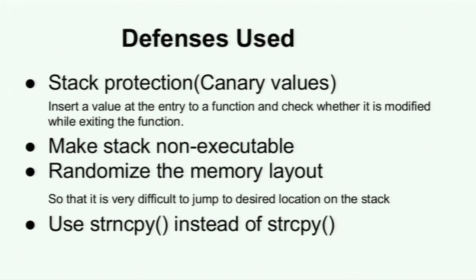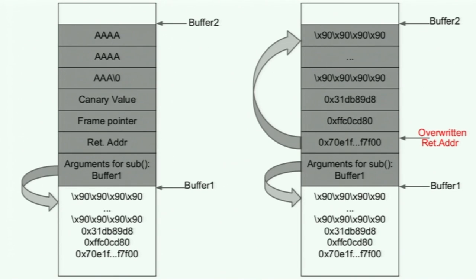Now, the defenses used to counter the buffer overflow attack. One defense is to use canary values. When a function is called, that function saves a random canary value after the end of the buffer. When the function is about to exit, it checks if the same value is still present. If it is the same, it returns normally; otherwise it raises an exception.